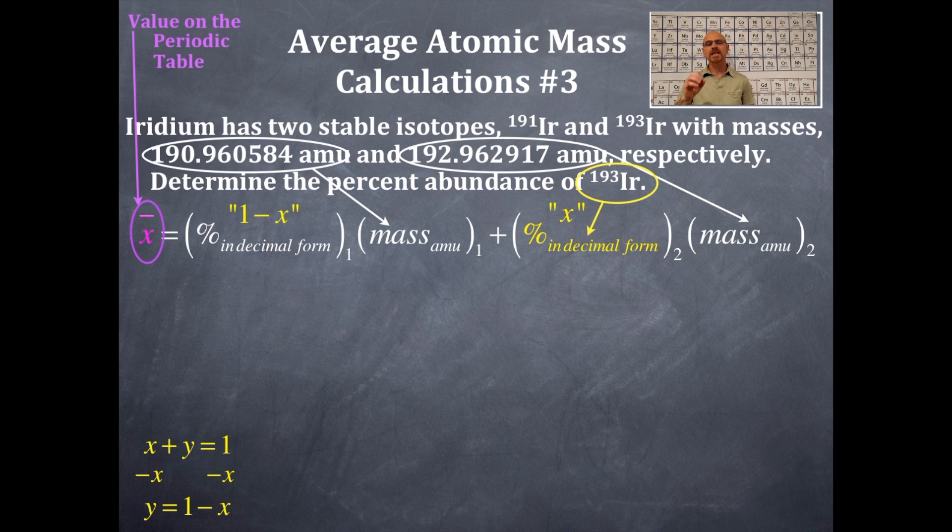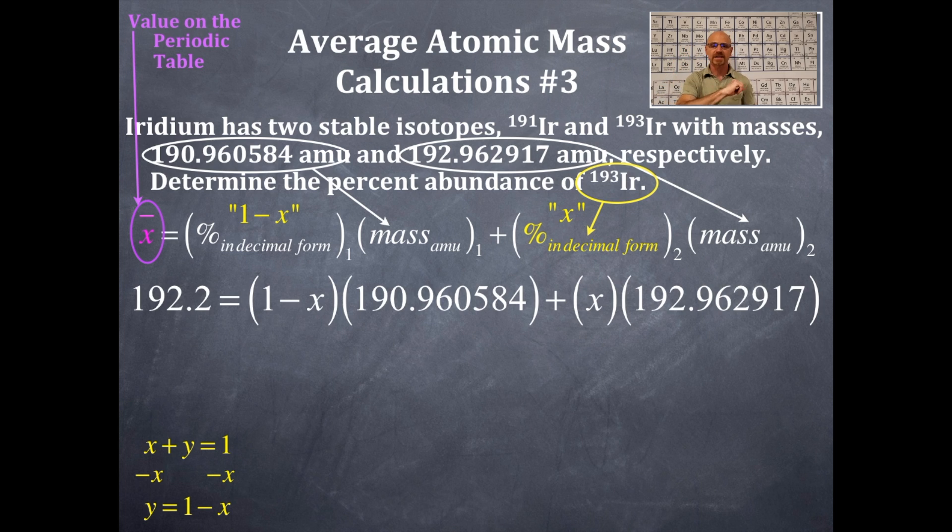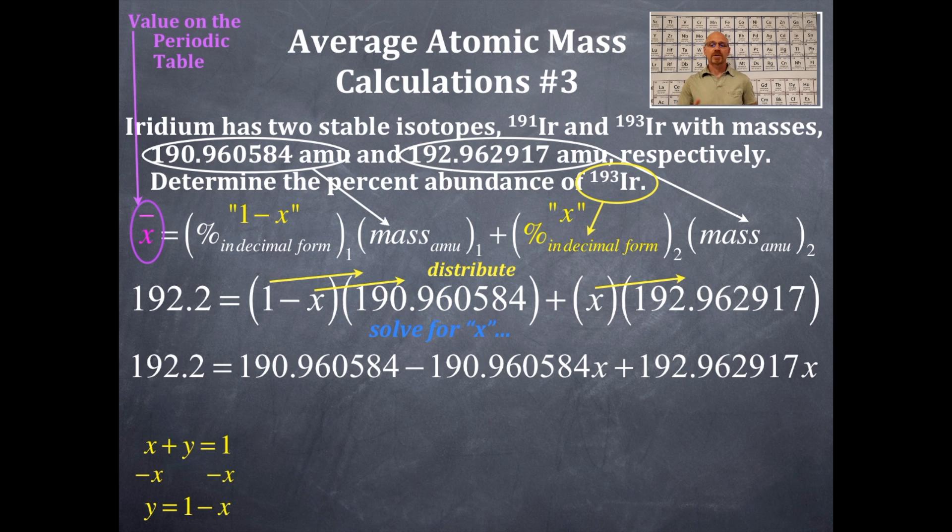Now, what we're going to do is we're going to plug in the values that we have, the number that's on the periodic table, the two masses, and then my variables in terms of x and 1 minus x. And that's going to go right there like that. So, the 192.2, that came from the periodic table for iridium. I got the 1 minus x, then I got the mass of the first isotope, the lower mass. Then I have x, which is what I'm solving for. So, what I have to do in this problem, hopefully you haven't forgotten your algebra skills from a long time ago. And what you have to do is distribute that 190 with the 1 and the minus x, and you're going to distribute the 192 with the x. And that's what we're doing right there like that. So, we're going to distribute this, and then we're going to solve for x after that.